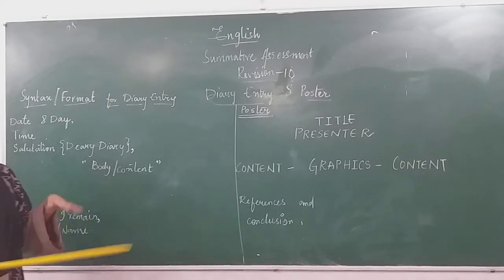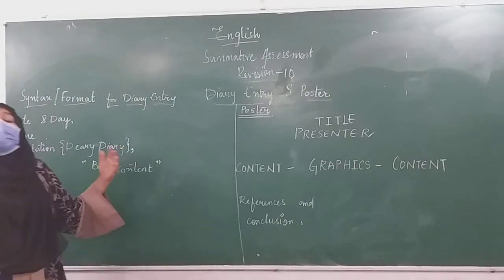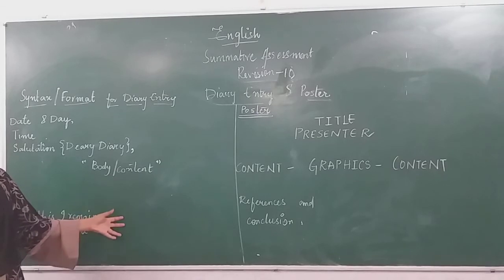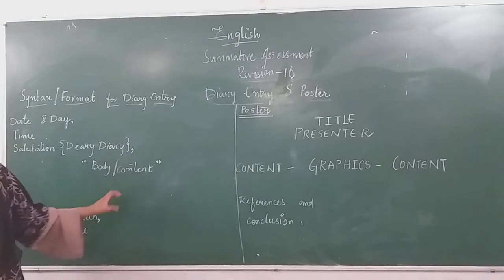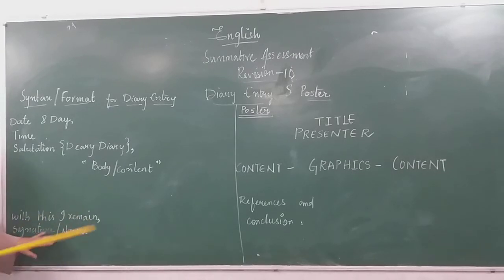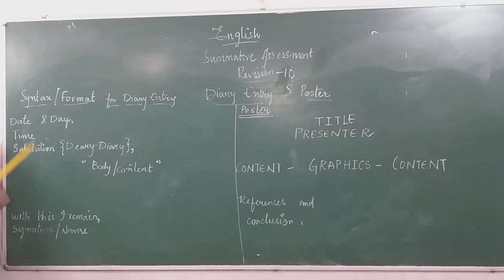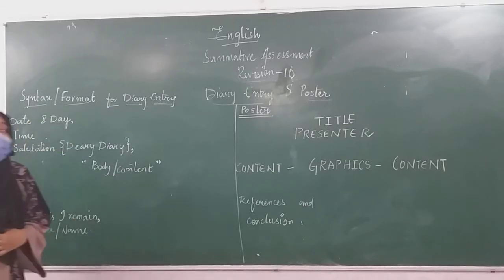Then you can move on to express what you want to say. After expressing your feelings or thoughts, you need to always conclude with 'With this I remain,' putting a comma just after that. At last, you need to either do your signature or write your name. This is the format followed for your diary entry.